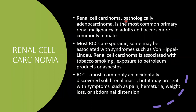Coming to renal cell carcinoma: pathologically, adenocarcinoma is the most common primary renal malignancy in adults, occurring most commonly in males. It is sporadic but can be associated with von Hippel-Lindau syndrome. Risk factors include tobacco smoking and exposure to petroleum products or asbestos. RCC is most commonly incidentally detected but may present with pain, hematuria, weight loss, or abdominal distension.